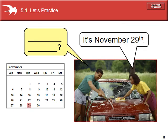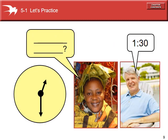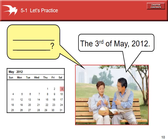Here we're given a specific date — it's November 29th. So remember, the question is going to be a little bit different: it should be "What's the date?" Next, we're given a time, so the question is going to be "What time is it?" Here we're given a specific date, so this one should be "What's the date today?" In this case, we have the day, the month, and the year.